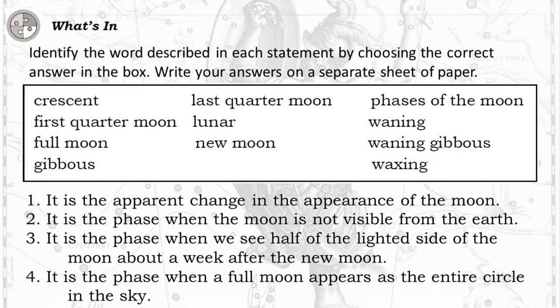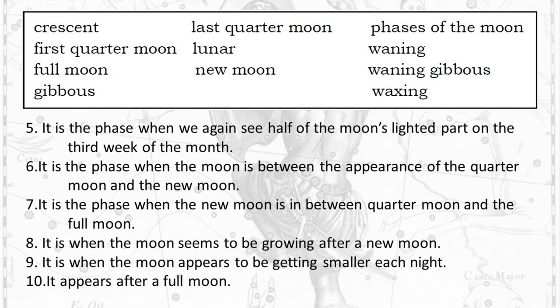Identify the word described in each statement by choosing the correct answer in the box. Write your answers on a separate sheet of paper. 1. It is the apparent change in the appearance of the moon. 2. It is the phase when the moon is not visible from the Earth. 3. It is the phase when we see half of the lighted side of the moon about a week after the new moon. 4. It is the phase when a full moon appears as the entire circle in the sky. 5. It is the phase when we again see half of the moon's lighted part on the third week of the month.